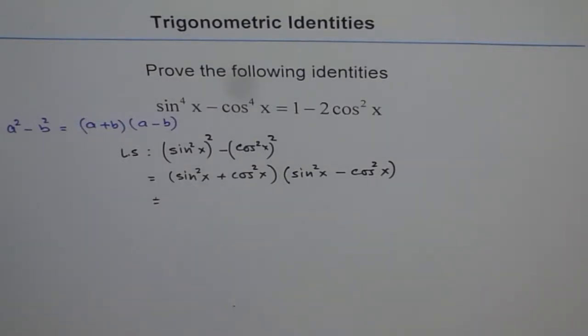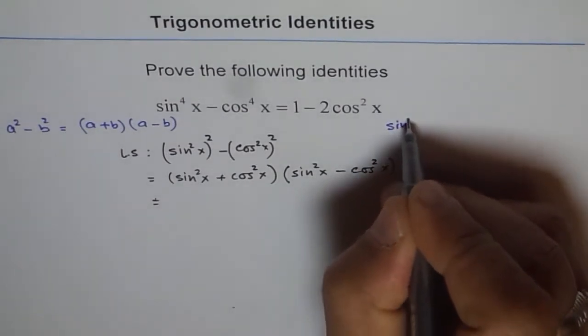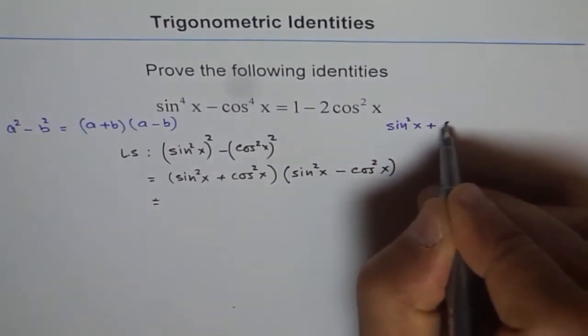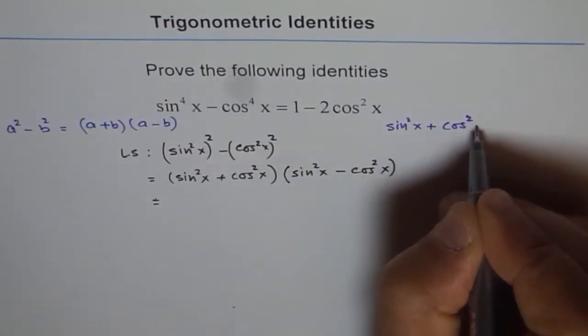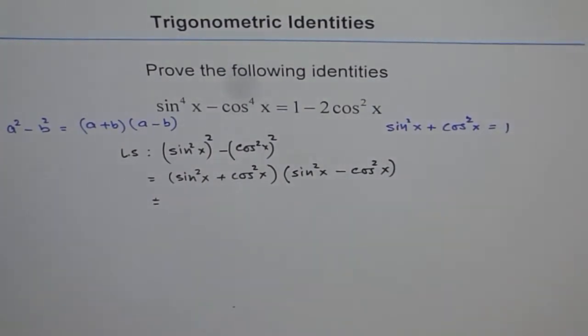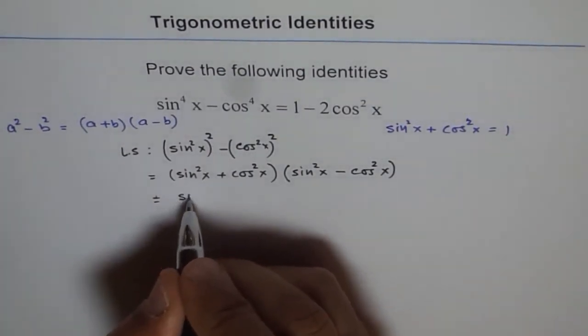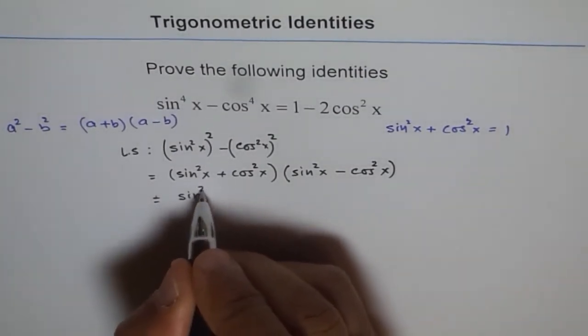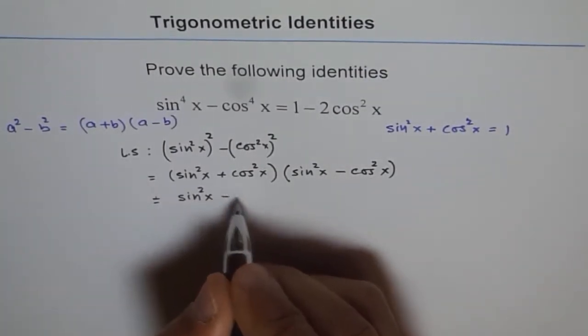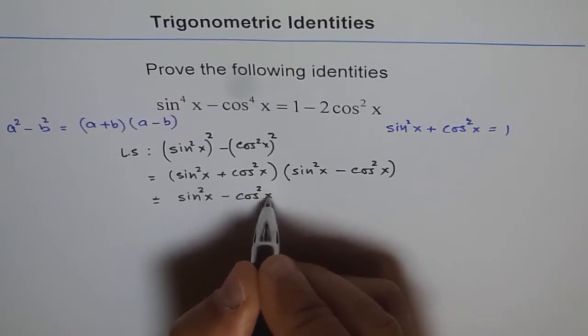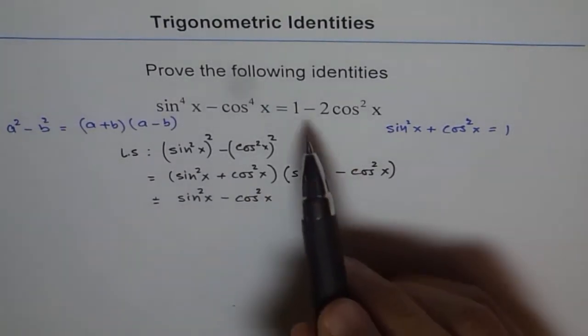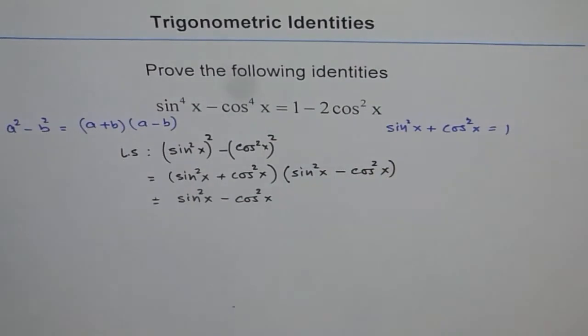What we know is sin^2x + cos^2x = 1. That is called the Pythagorean identity. So we are left with sin^2x - cos^2x. Now what do we need? We need 1 - 2cos^2x.